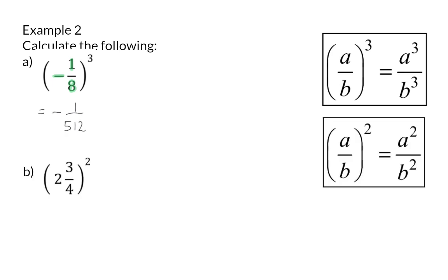In b, we now have a mixed number that should be squared. So my first step will be to rewrite the mixed number as an improper fraction. Next, I will square 11 and then also square 4 to get my final answer.